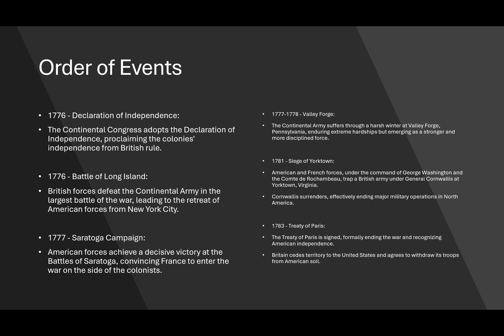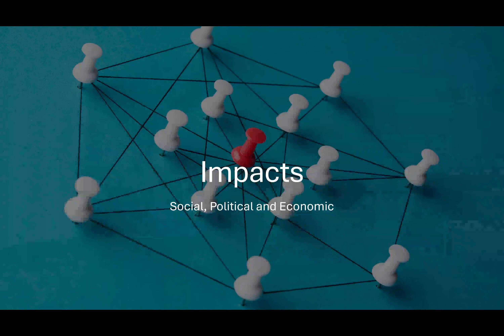In 1783, we had the Treaty of Paris, which was signed formally ending the war and recognizing American independence. The British ceded the territories to the United States and agreed to withdraw their troops from American soil. That's really a rundown of the key events of the War of Independence.